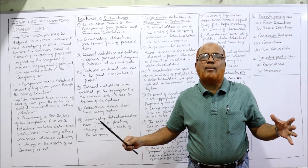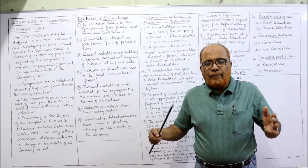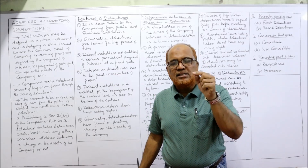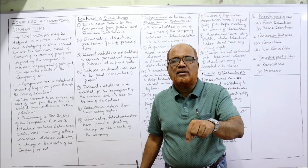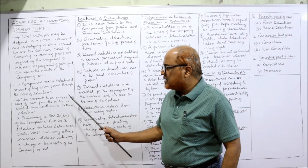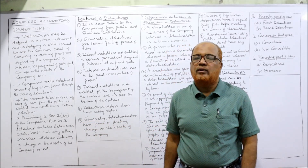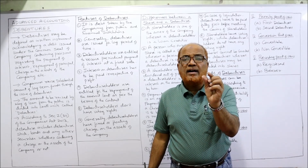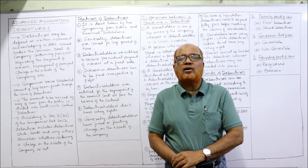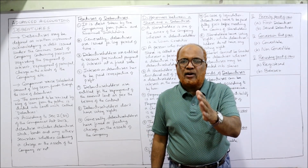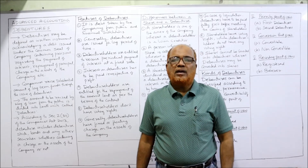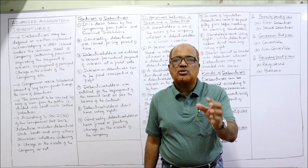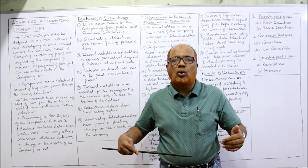Companies can raise a substantial amount from the public by issuing debentures. A company requires long-term funds, and one method is to raise them by issuing debentures to the public. The loan amount raised from the public is divided into small units called debentures. For example, if a company requires 50 lakh rupees, it divides that into 5 lakh units of 10 rupees each, issuing 5 lakh debentures of rupees 10 each to get 50 lakh rupees.